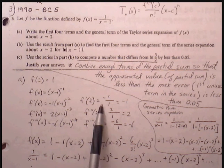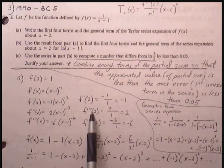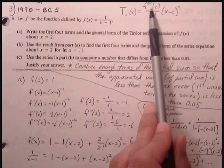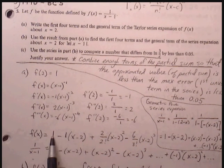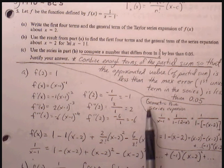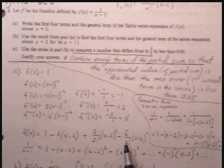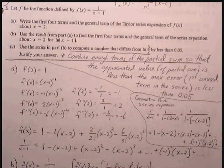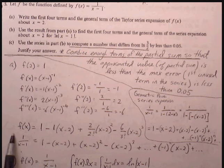Plugging 2 into each of the derivatives and the function, we get f(2) = 1, f'(2) = -1, second derivative at 2 is 2, third derivative at 2 is -6. Then we plug into our rule. The first two terms are just the result of the slope of the tangent line: y₁ minus slope times (x - x₁). Then we build: second derivative evaluated at 2 over 2 factorial times (x-2) squared, and the last term is -6 over 3 factorial times (x-2) cubed. So we have four terms, which represents the first four terms of 1/(x-1).